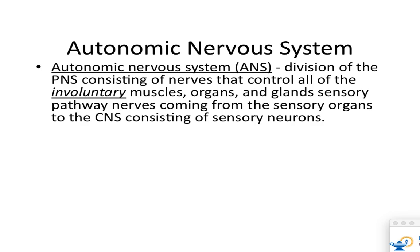Your autonomic nervous system is a division of the peripheral nervous system that is in control of all your involuntary actions. You can raise your hand and tell me what involuntary means — this is information I covered last week.